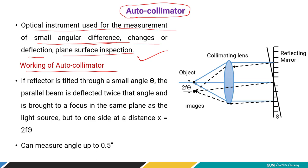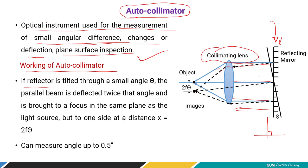The autocollimator works on a simple principle of reflections. Looking at the figure: there is a reflecting surface and a light source. Light is thrown at the mirror-like surface. Because it is a mirror-like surface, there are reflections and the light comes back. The collimating lens converts the light rays into parallel form, and they strike the reflecting mirror-like surface. If this mirror-like surface is perfectly vertical with no angular deviations, then the object and its reflected image will coincide at a single position, indicating the surface is perfectly perpendicular.